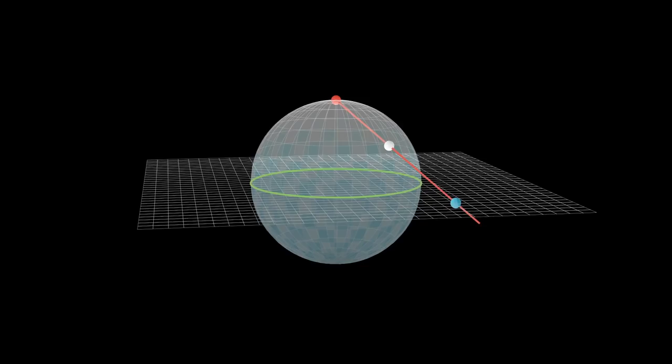The intersection between the plane and sphere is a circle, and points in the northern hemisphere map outside this circle, while points in the southern hemisphere map inside it.